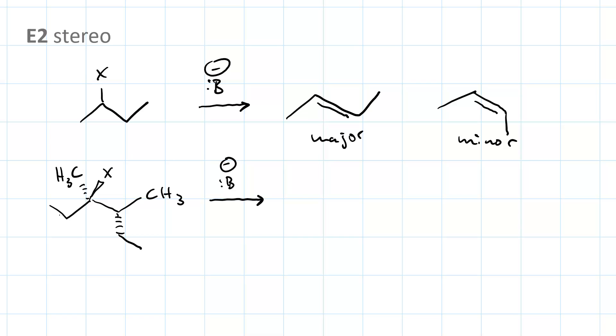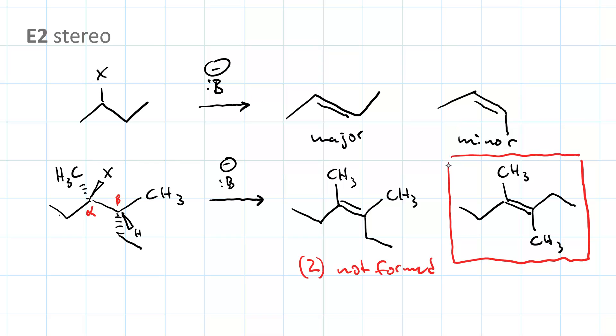Remember also that when there is only a single beta proton, as in the case here, this is our alpha carbon, this is our beta carbon. The beta proton is implied. Here it is. Right now, there's a 60 degree torsion angle between the beta proton and the leaving group, X. We need there to be a 180 degree torsion angle. In other words, the beta proton must be anti-periplanar to the leaving group. In this case, the Z isomer is not formed.